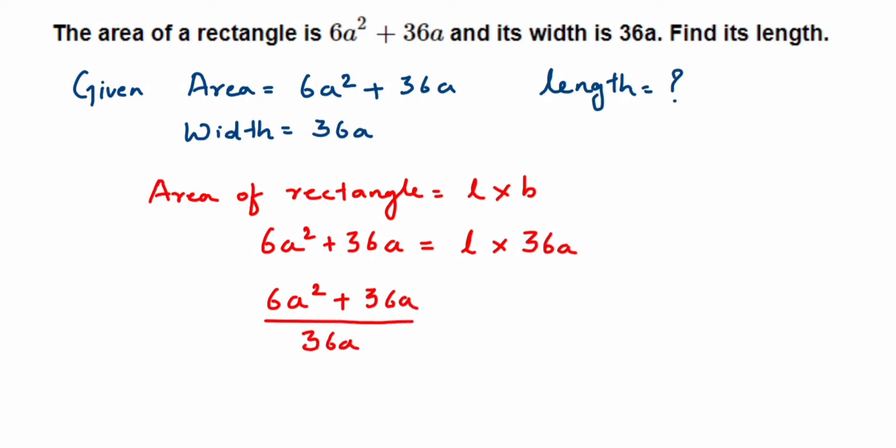Now a very important thing here is you cannot cancel this 36a and 36a, because this 36 is in addition with 6a². If there was a multiplication sign over here in place of addition, then you might have cancelled this.